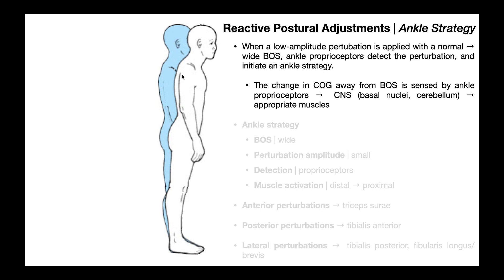In the example shown on the right side of the screen, this is an ankle strategy. In an ankle strategy, the perturbation is going to be small amplitude — not very forceful. The blue image represents the original position, fully upright erect posture in standing. As we go throughout this video, we'll see variations of the ankle strategy where the perturbation is coming from a different direction.